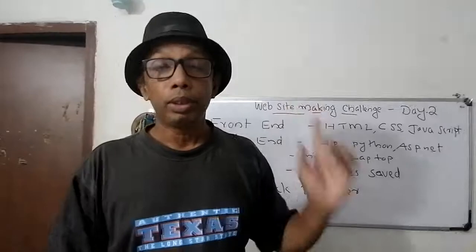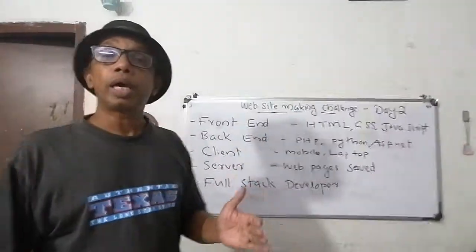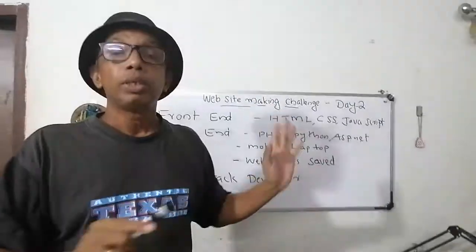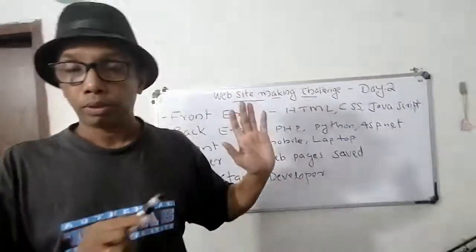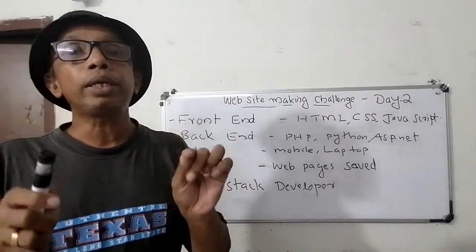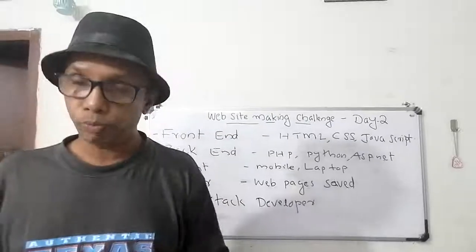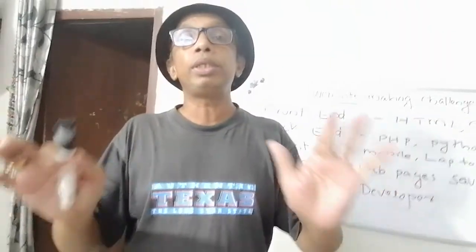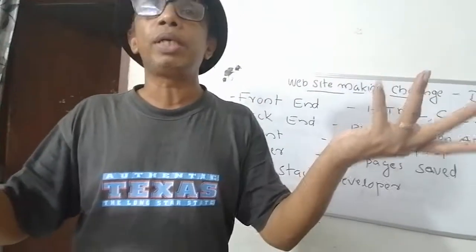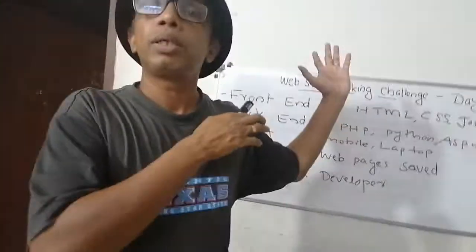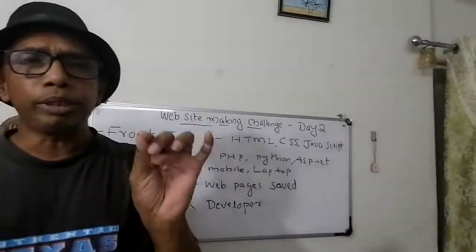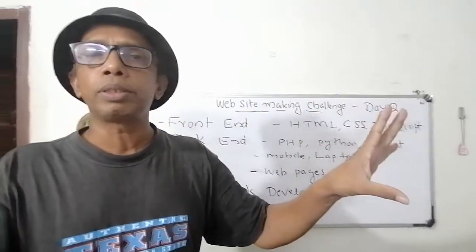The next word is 'server'. Server means we are keeping the web pages into a computer, into a server. The server is staying somewhere. Suppose if you want to open a web page — we make a request to the server saying we need that web page. Then the browser will bring back that page and show it to us. So the old web pages we are keeping in the server. The server is working 24 hours. Sometimes we are hearing 'server is down' — that means the hosting service may have some issue. So the ultimate meaning is: where we are keeping the web pages, that we can call the server.